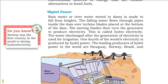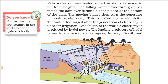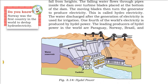Hydro power — Norway was the first country in the world to develop hydroelectricity. Rainwater and river water stored in a dam is made to fall from height through pipes inside the dam over turbine blades placed at the bottom. These moving blades turn the generator to produce electricity — this is called hydroelectricity. The water released can also be used for irrigation. One-fourth of the world's electricity, that is 25%, is produced by hydro power.